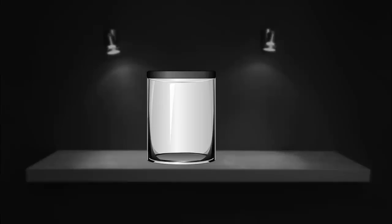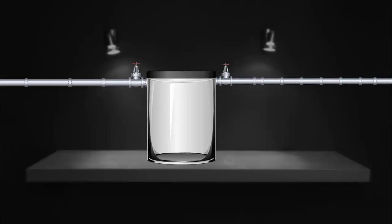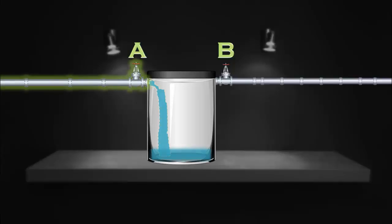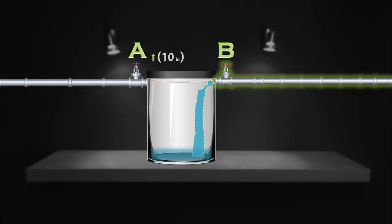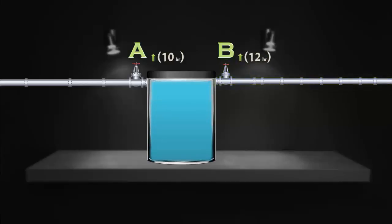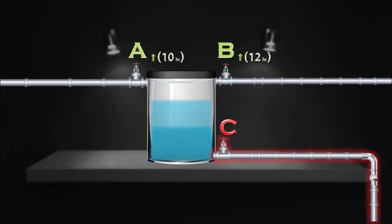There is a container which has two inlet pipes attached called Pipe A and Pipe B. Pipe A alone can fill the container in 10 hours and Pipe B alone can fill the container in 12 hours. The container also has an outlet pipe connected to it called Pipe C. Pipe C can alone empty the filled container in 20 hours.